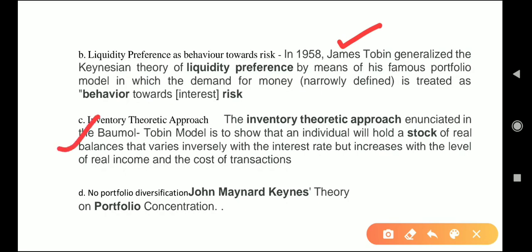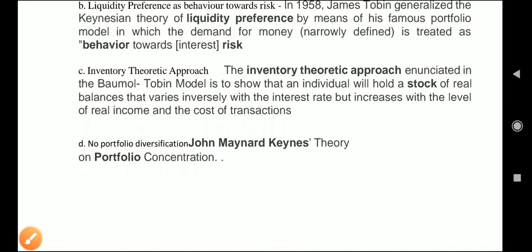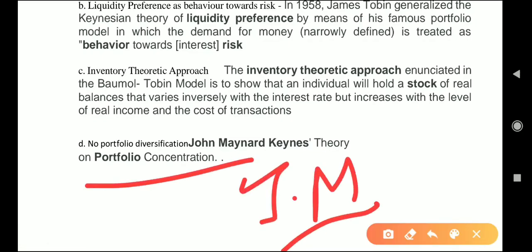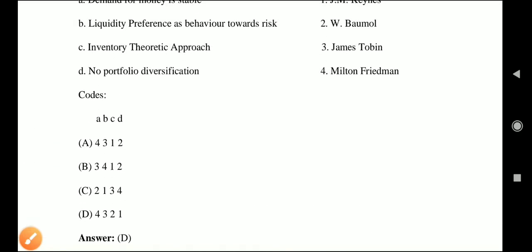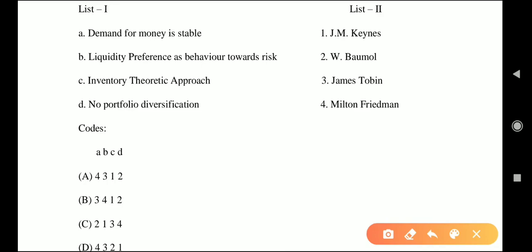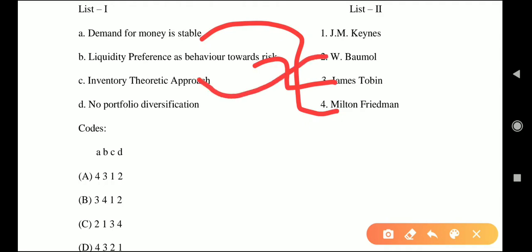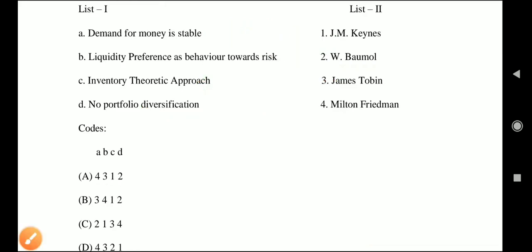Inventory theoretic approach is from the Baumol-Tobin model, explained by W. Baumol. It shows that an individual holds a stock of real balances that vary inversely with the rate of interest but increase with the level of real income and cost of transactions. No portfolio diversification was stated by J.M. Keynes — the concept of portfolio concentration in Keynesian theory.